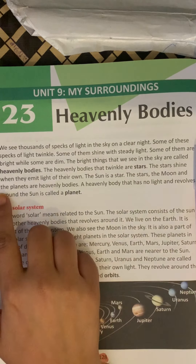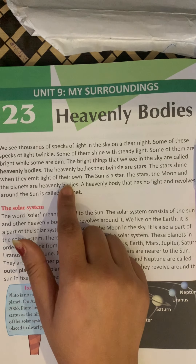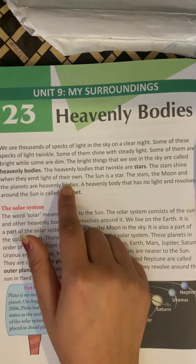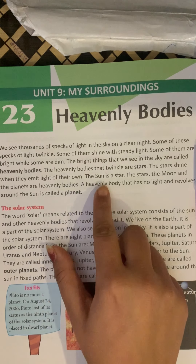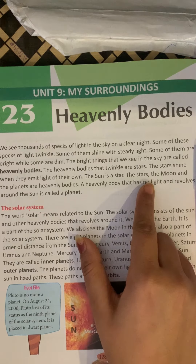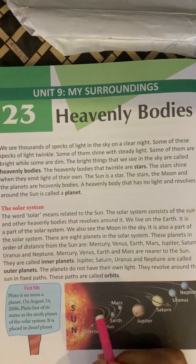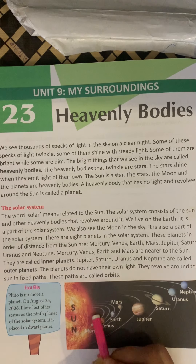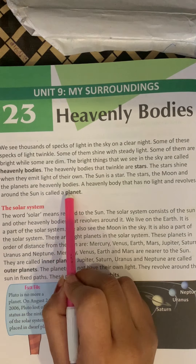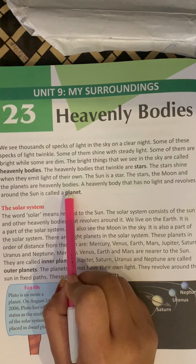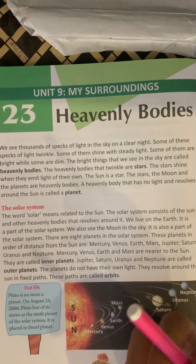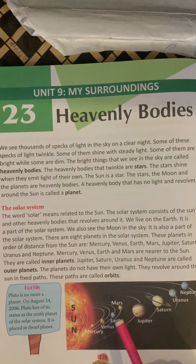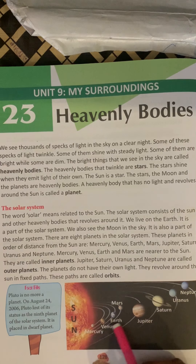What are heavenly bodies? A heavenly body that has no light — the heavenly body that does not have its own light and revolves around the sun is called a planet. What is the sun? Sun is a star. Then there is the moon. These heavenly bodies do not have light of their own. These are called planets.